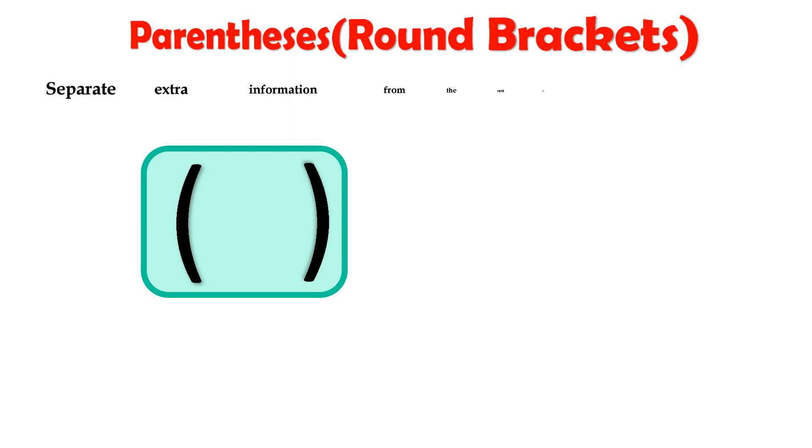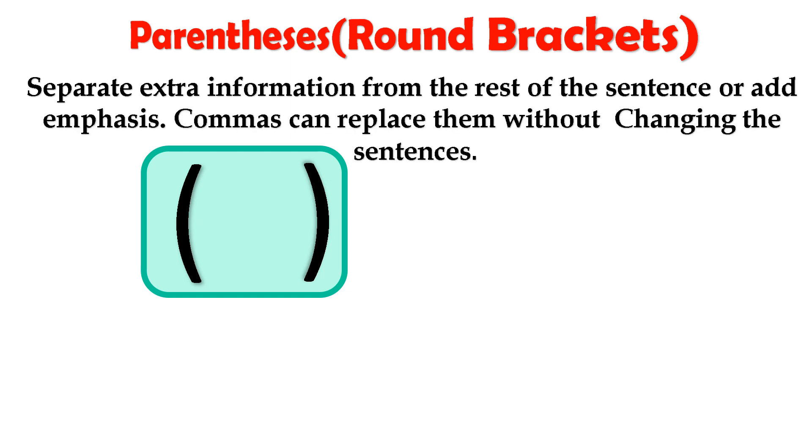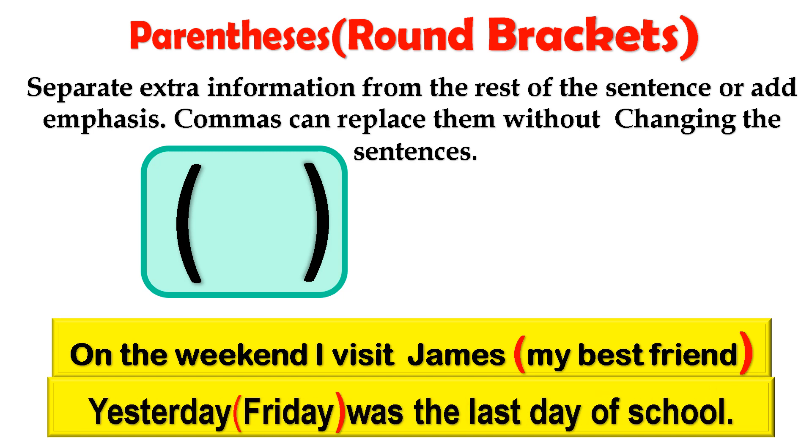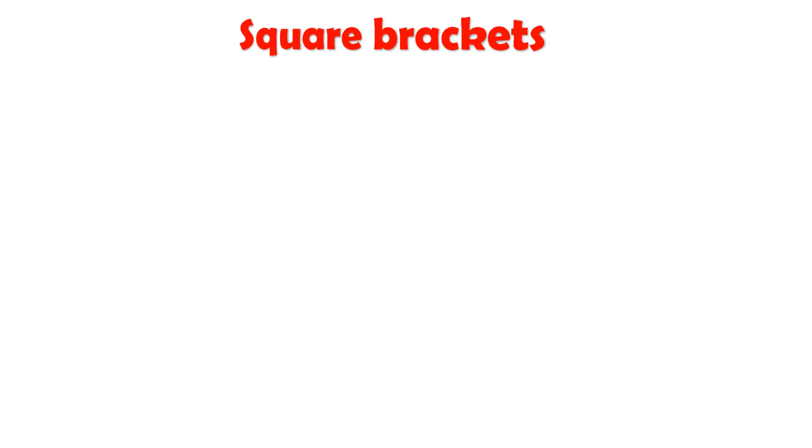Parentheses, or more commonly known as round brackets. Round brackets are used to separate extra information from the rest of the sentence or to add emphasis. It's important to note that commas can replace brackets without changing the actual sentence. For example, on the weekends I visit James (my best friend). Friday was the last day of school. These are both examples where round brackets are used to separate the extra information within the sentence.